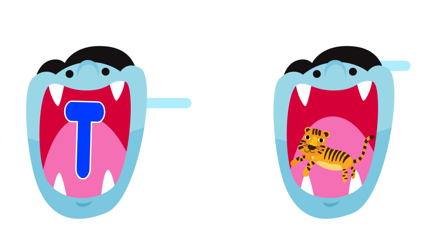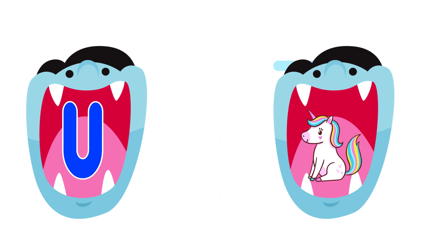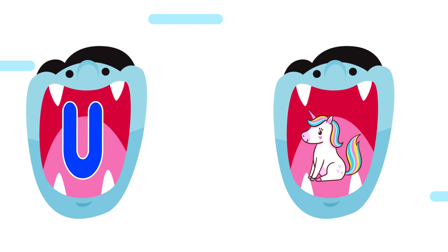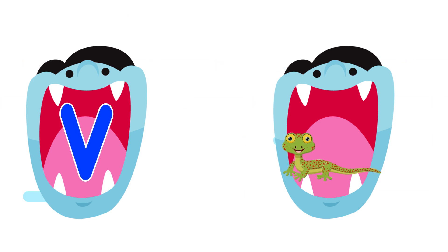T is for tiger. T, T, tiger. T, T, tiger. T, tiger. U is for unicorn. U, U, unicorn. U, U, unicorn. U, unicorn. V is for Vereness. V, V, Vereness. V, V, Vereness. V, Vereness.